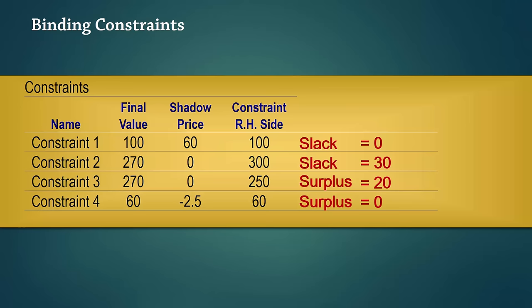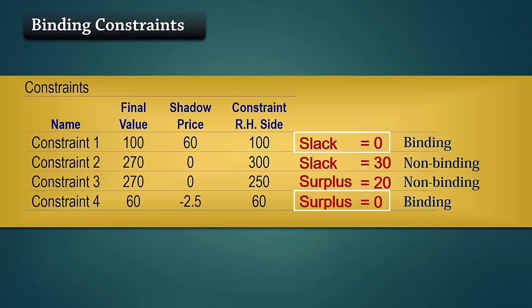Lastly, the binding constraints are the ones that have final values equal to the right hand side, that is the ones with 0 slack or surplus values. So Constraints 1 and 4 are binding, while 2 and 3 are non-binding. Note also that the binding constraints have non-zero shadow prices.